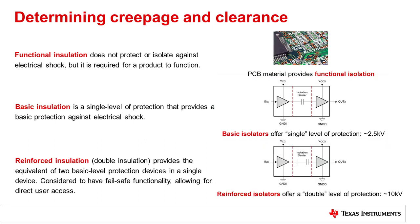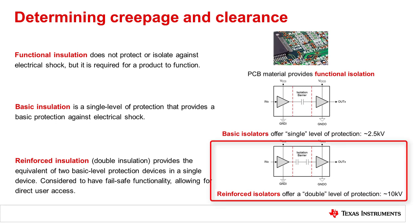Reinforced insulation, or double insulation, provides the equivalent of two basic level protection devices in a single device and is also considered to have fail-safe functionality, allowing for direct user access. This does not mean that there are two devices in a single package, but that the tested insulation of a reinforced isolator performs at twice the level of a basic isolator. For reinforced digital isolators, the level of protection is significantly higher, on the order of 8 kV to 10 kV or more.